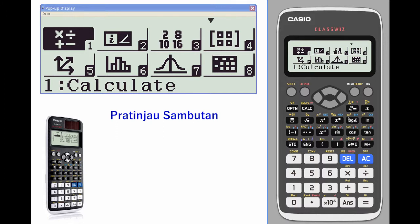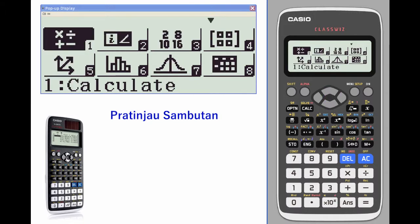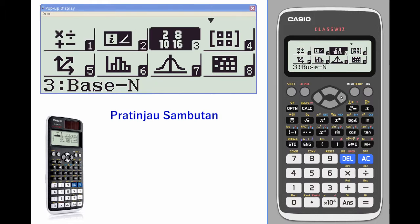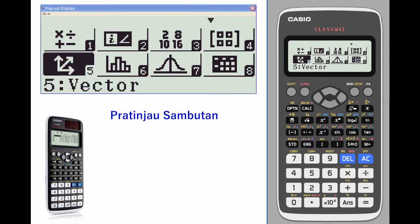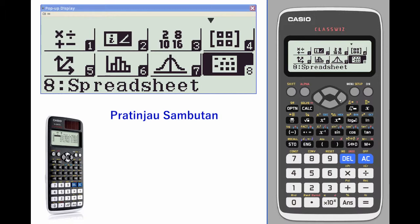This is a quick introduction of the Casio ClassWiz. You'll notice it has a high resolution LCD screen with icons you can click through to see what's available. The features include: calculate, complex calculations, base-n calculations, matrix calculations, vectors, statistics, distributions, and spreadsheets.